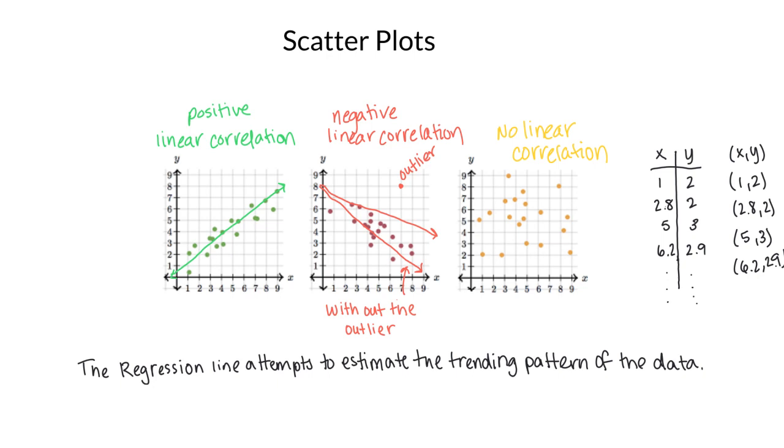Looking again at the green and the red scatter plots, they are different because one is a positive linear correlation and the other one is a negative linear correlation. But if we look purely at the dots, which one do you think has a stronger linear correlation? In other words, which trend appears to be more evident?